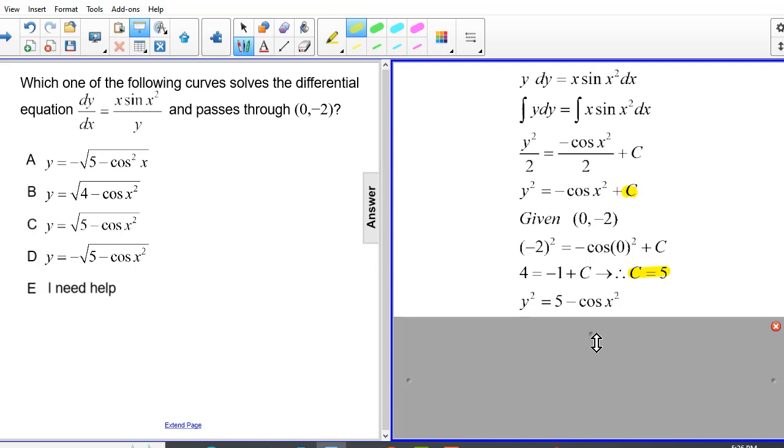Now we solve for y. We have y equals plus or minus the square root of 5 minus cosine x squared.